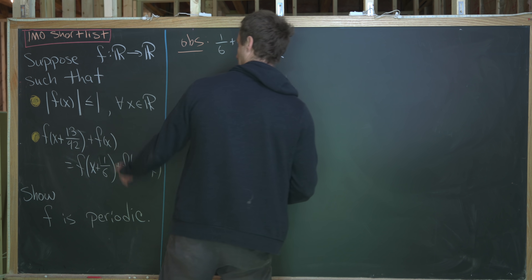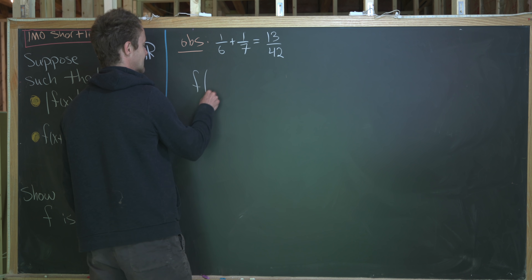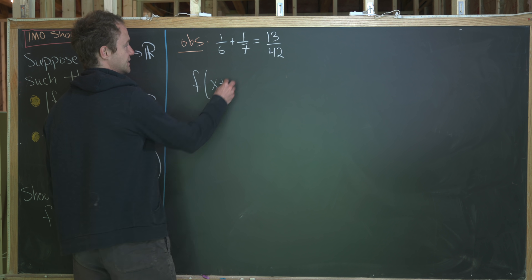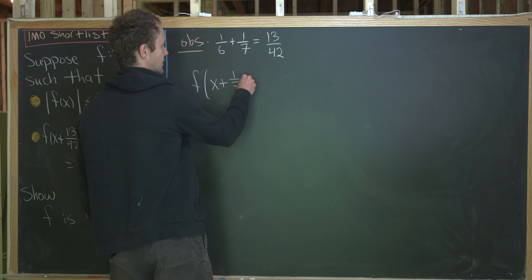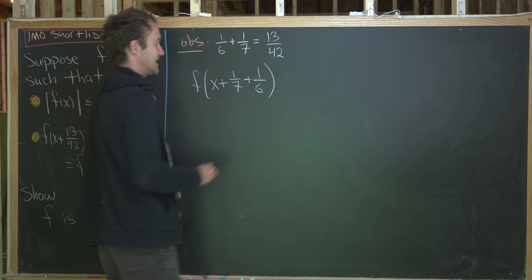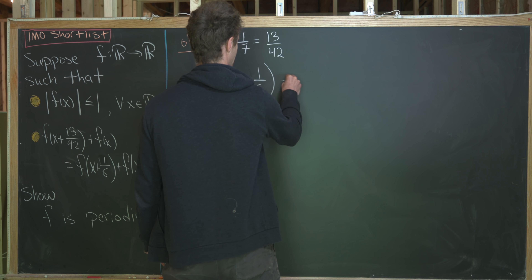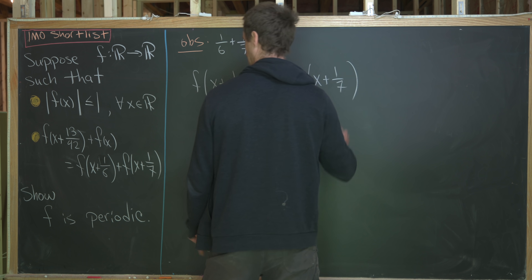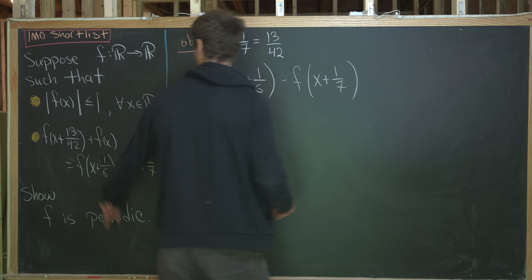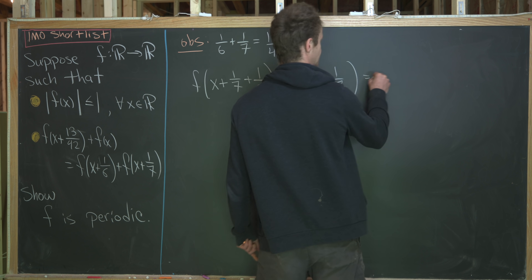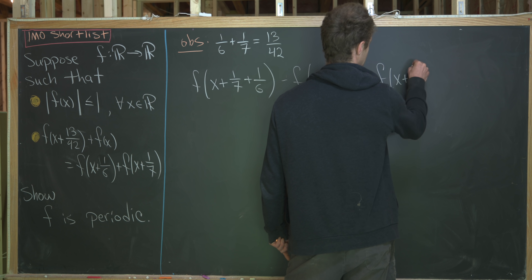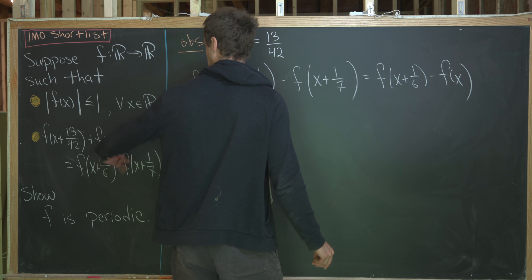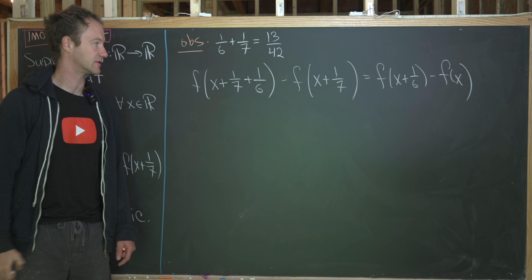We can take the original equation and rewrite it as f(x + 1/7 + 1/6) minus f(x + 1/7) equals f(x + 1/6) minus f(x). That's just from rewriting 13/42 as 1/7 + 1/6 and moving terms over.